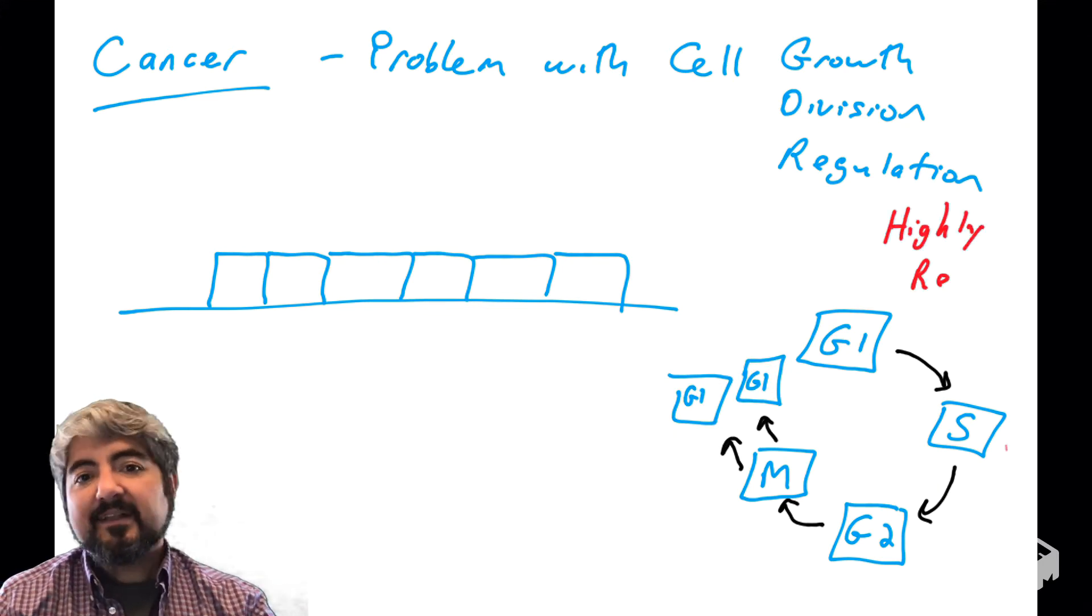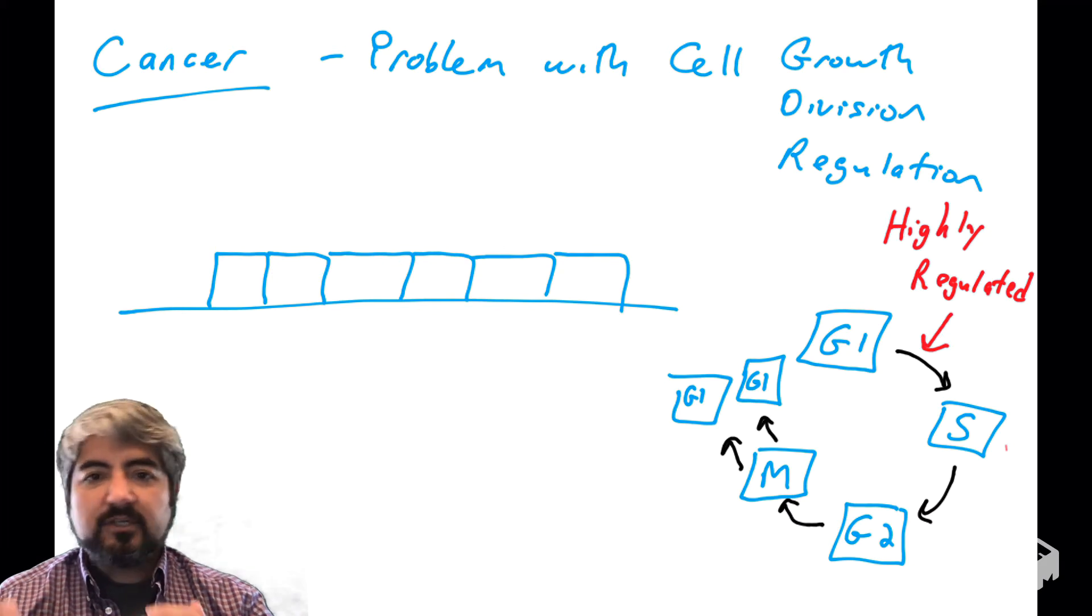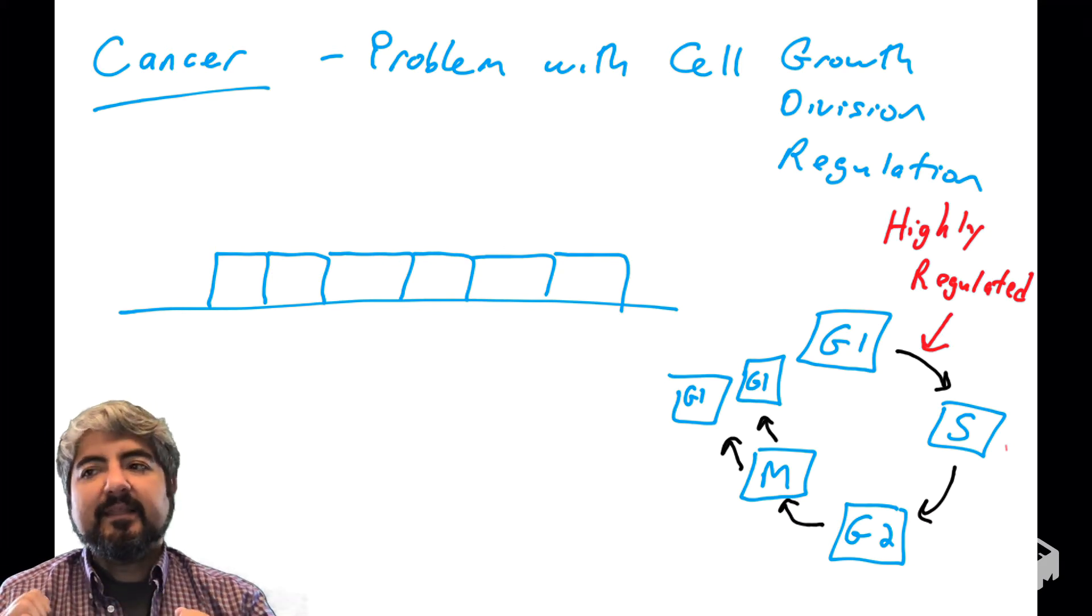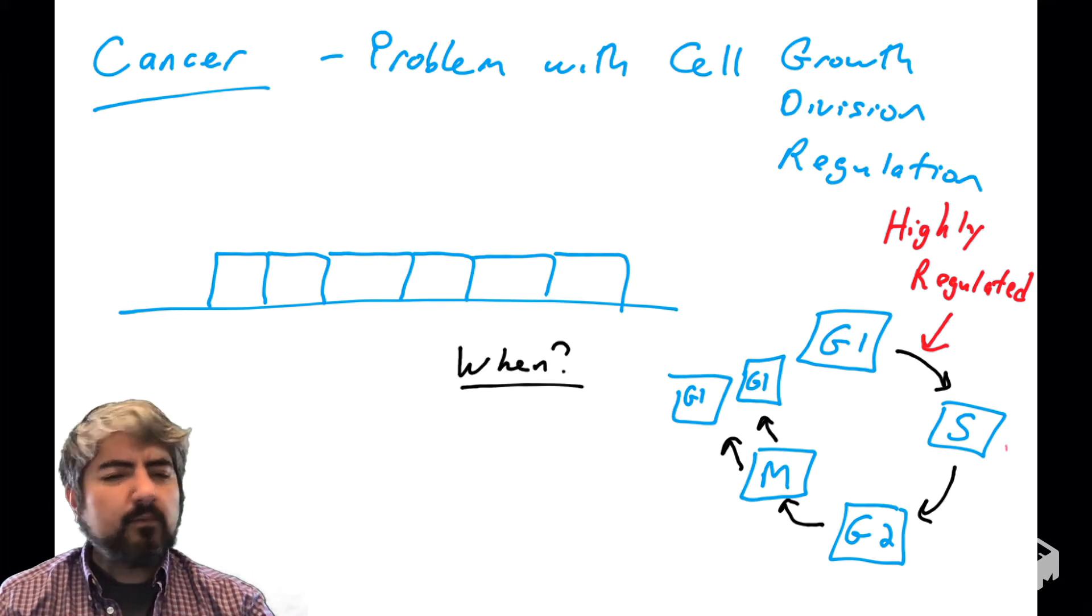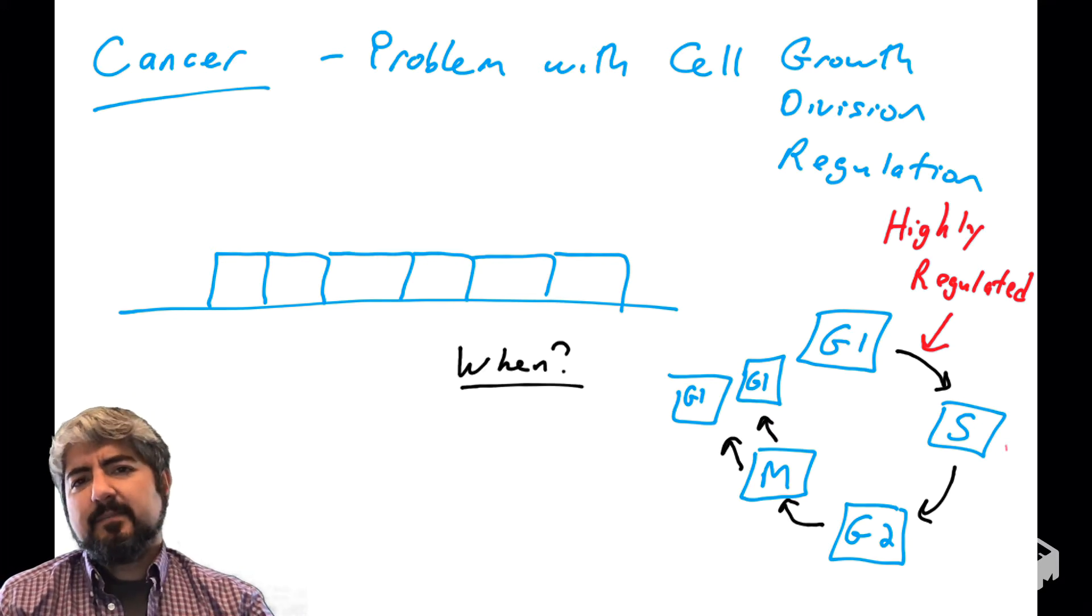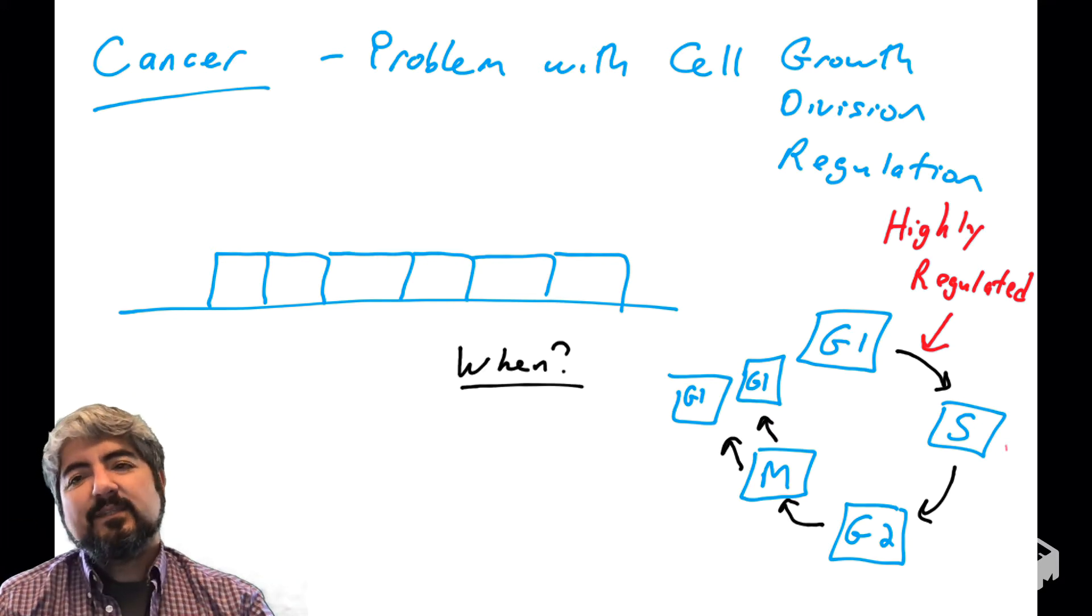So this process is very highly regulated. Cells should not be going through the cell cycle unless there's a reason to make more cells. So think about it. Why should our body need to make more cells? When do we make more cells?